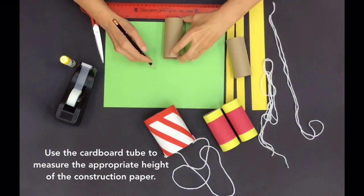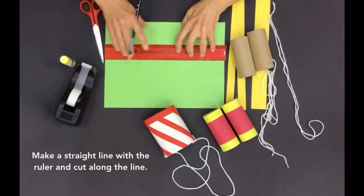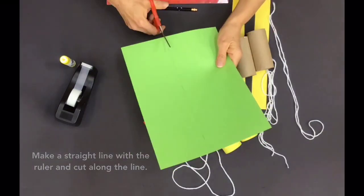Use the cardboard tube to measure the appropriate height of the construction paper. Make a straight line with the ruler and cut along the line.